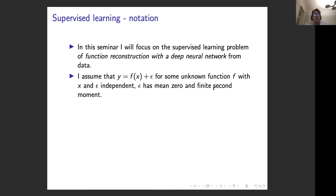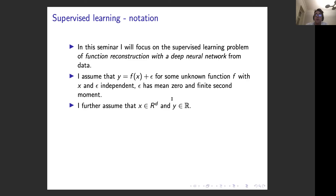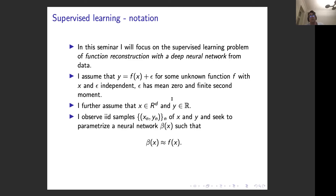We assume y equals f(x) plus a noise term e, where e and x are independent, the noise has zero mean and finite variance, x is d-dimensional, and y is scalar. We observe a set of data points {x_i, y_i} and look for a neural network β(x), a function from ℝ^d to ℝ, that approximates f well.